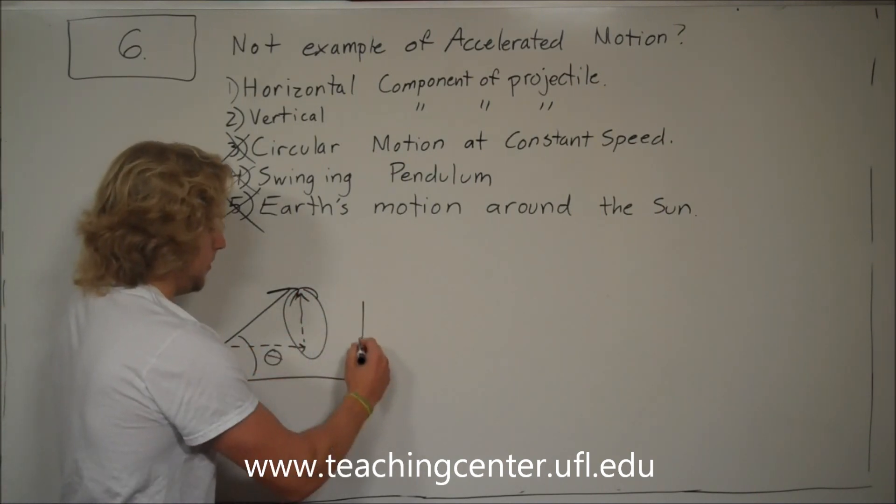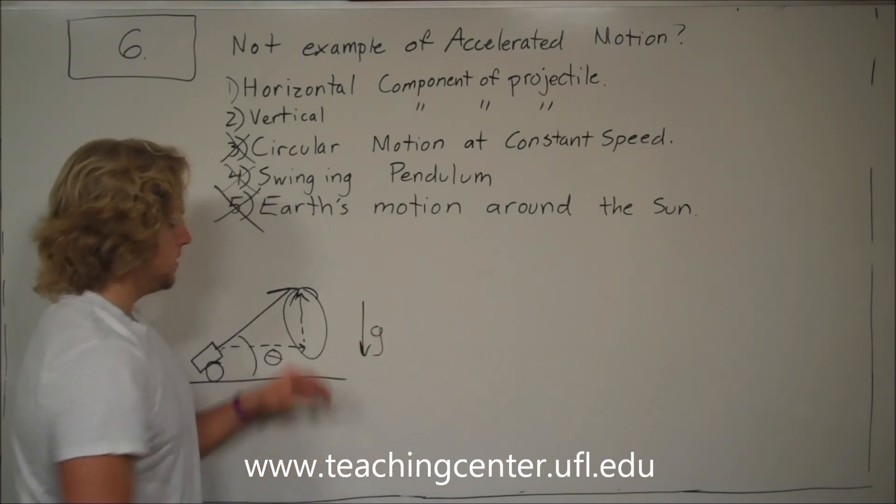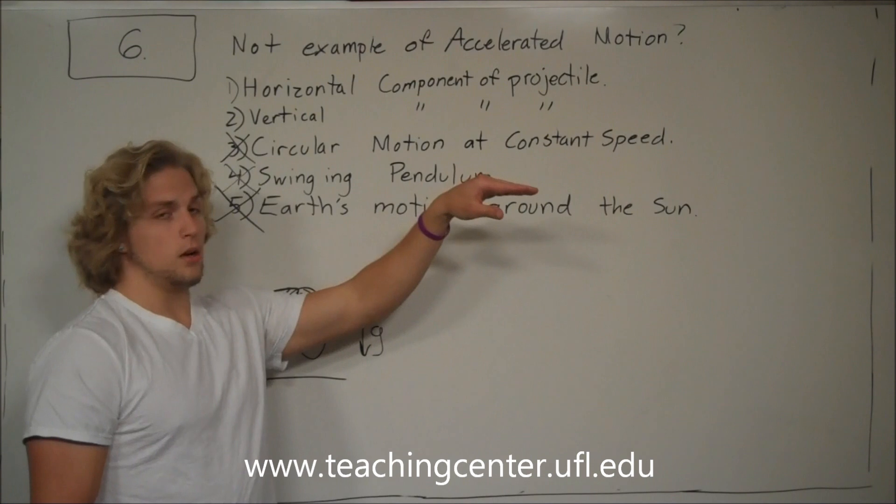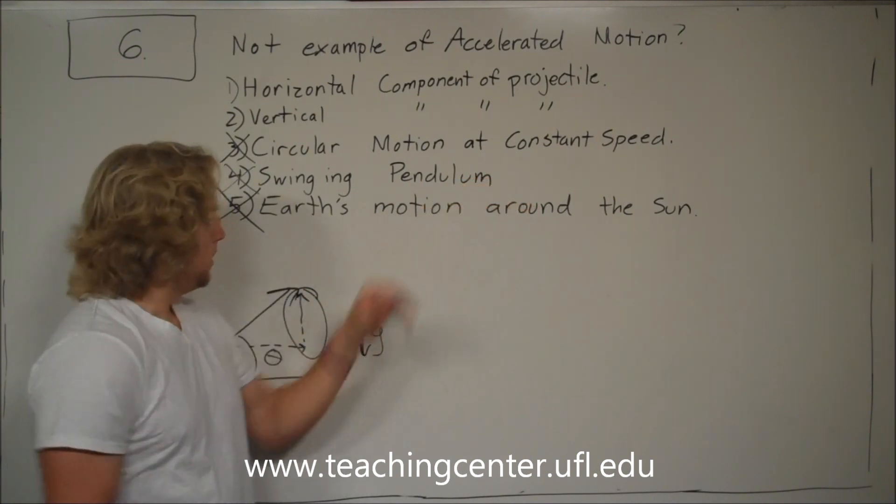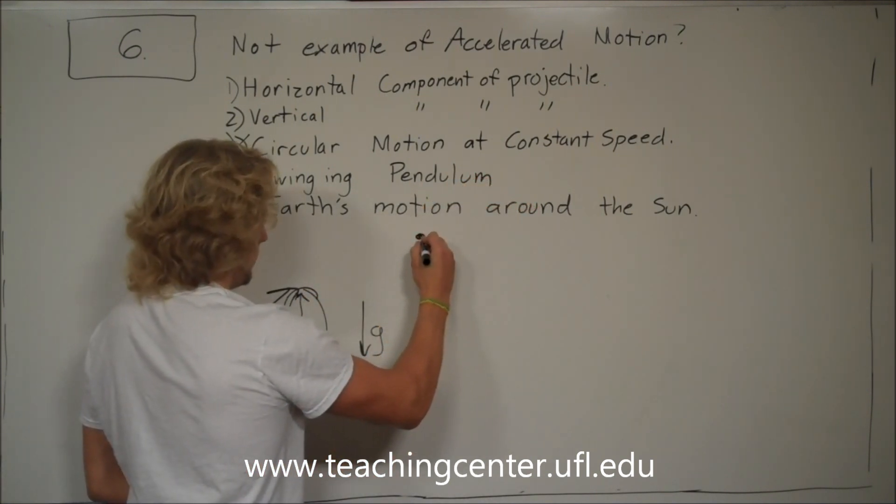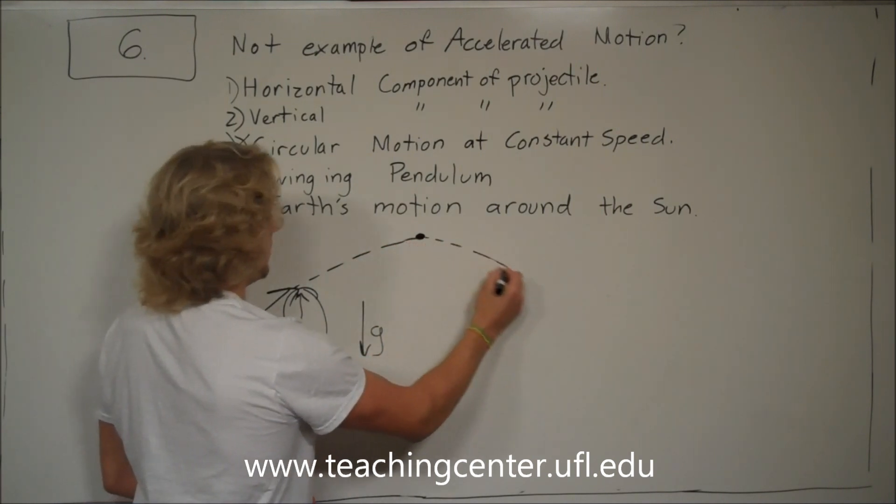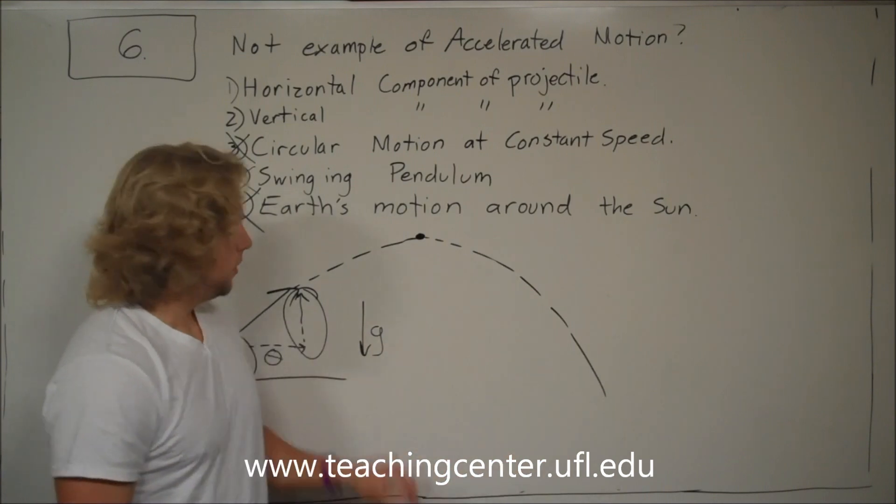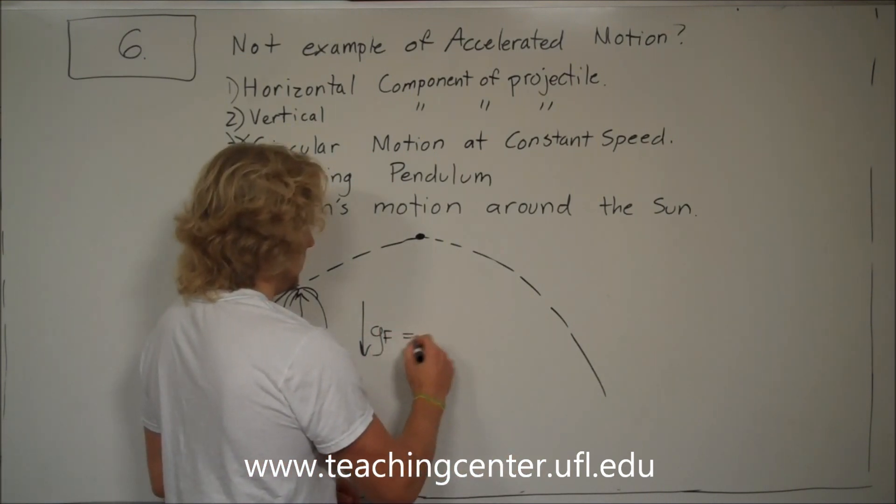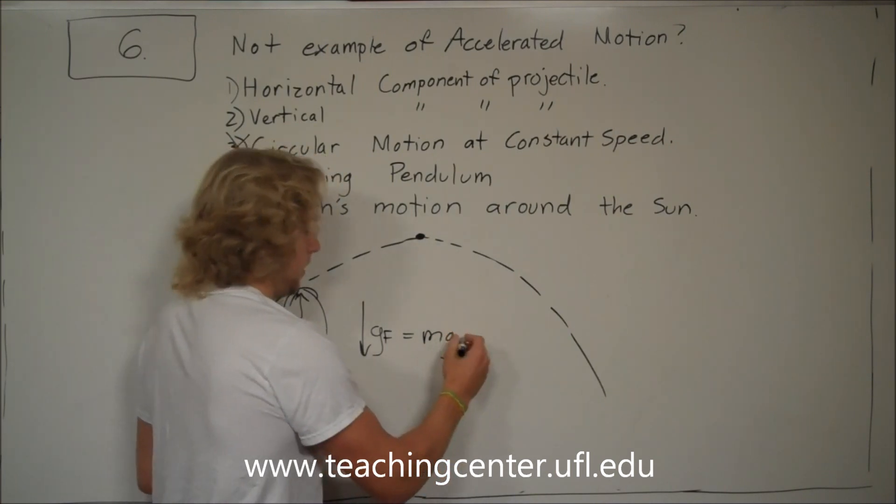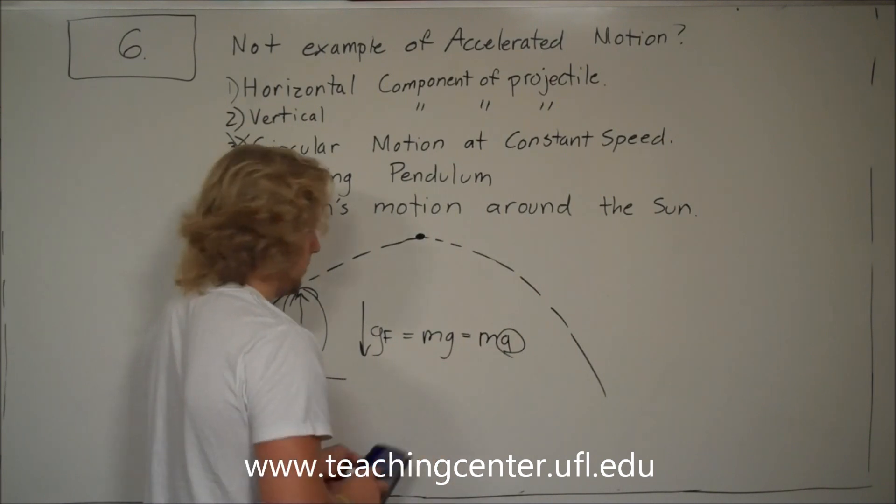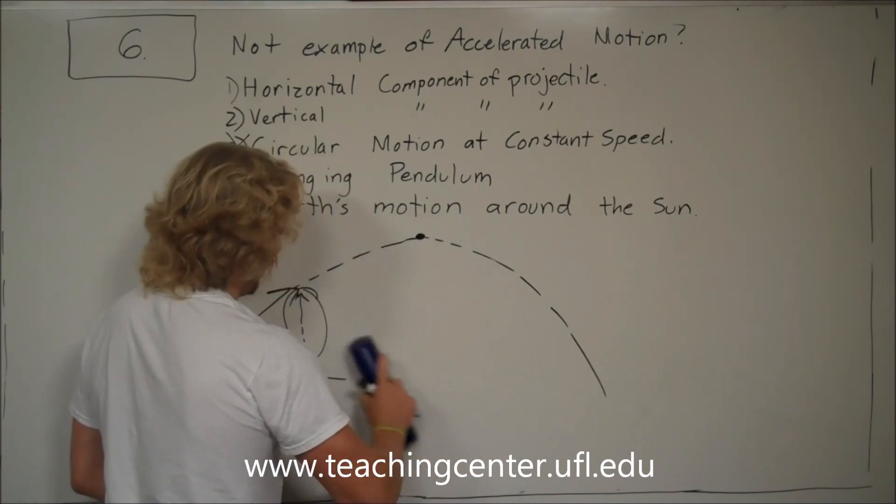It has gravity pulling down on it consistently. That's why when it's shot up, it slows down and only reaches a certain height. It stops, and then it starts to speed up going back towards the Earth's surface because of gravity. Gravitational force equals mg, which equals ma, which is acceleration. So that has acceleration in it.